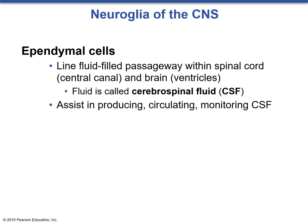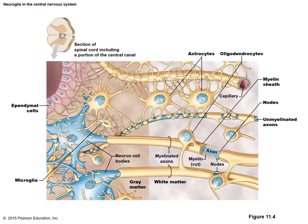A diagram shows all glial cells and neurons interacting in the CNS, illustrating the separation between gray matter and white matter. Astrocytes can be seen providing scaffolding around neurons and around a capillary, creating the blood-brain barrier. Oligodendrocytes are shown wrapping myelin sheaths around axons to help with action potential conduction. Ependymal cells line a fluid-filled cavity on the far left, and a microglial cell floats in the middle with feather-like protrusions, acting as a phagocyte.